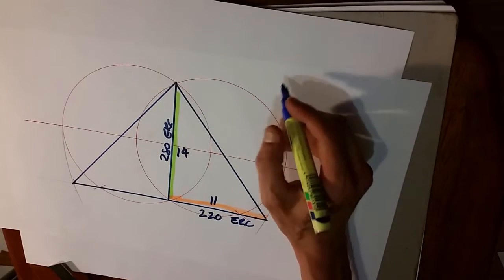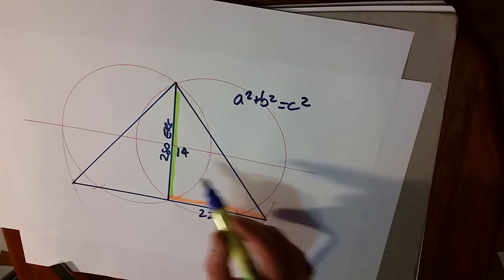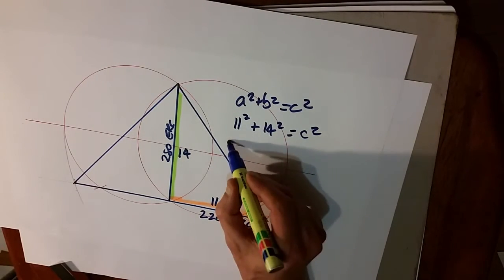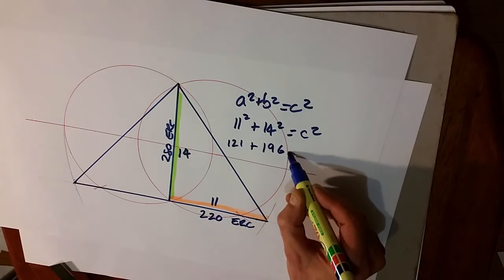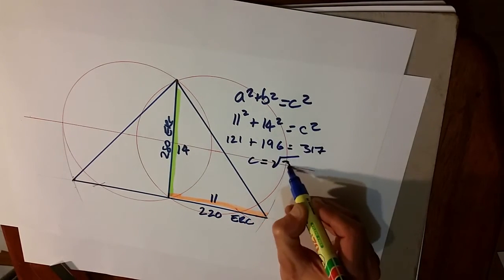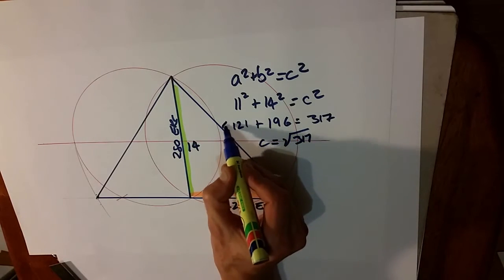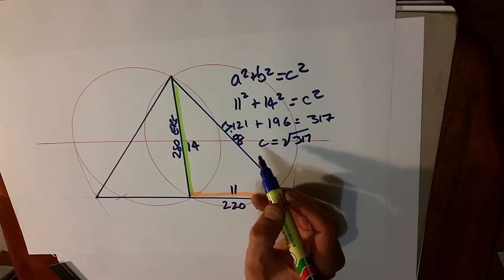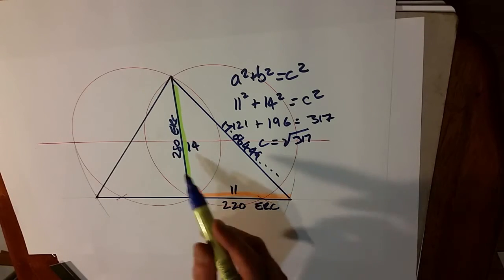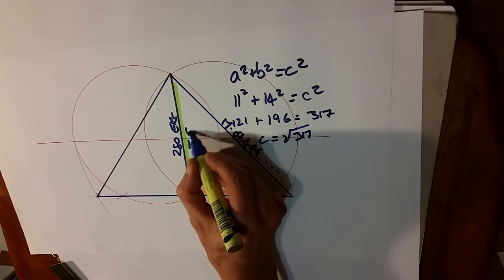So we can simplify that down to now 14 over 11. And then we'll use the Pythagorean theorem: A squared plus B squared equals C squared. Which is 11 squared plus 14 squared equals C squared. So 121 plus 196 equals 317. Therefore C equals square root of 317. And that's 17.80449 etc. So now we have A, B and C.